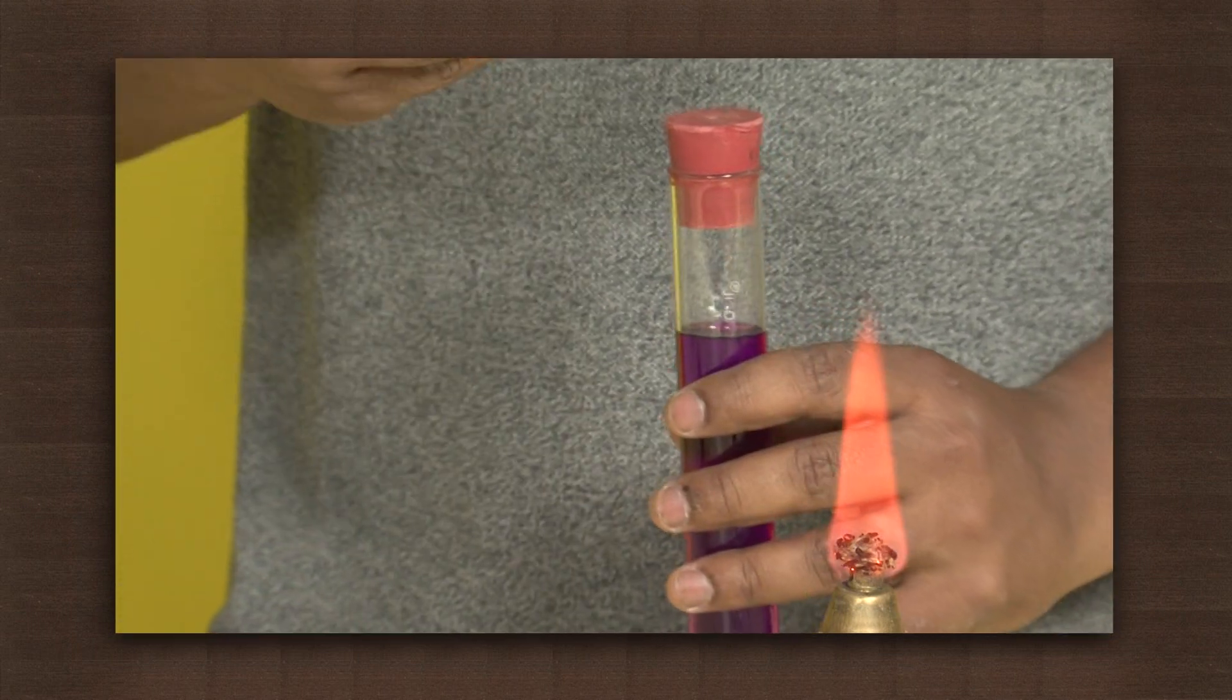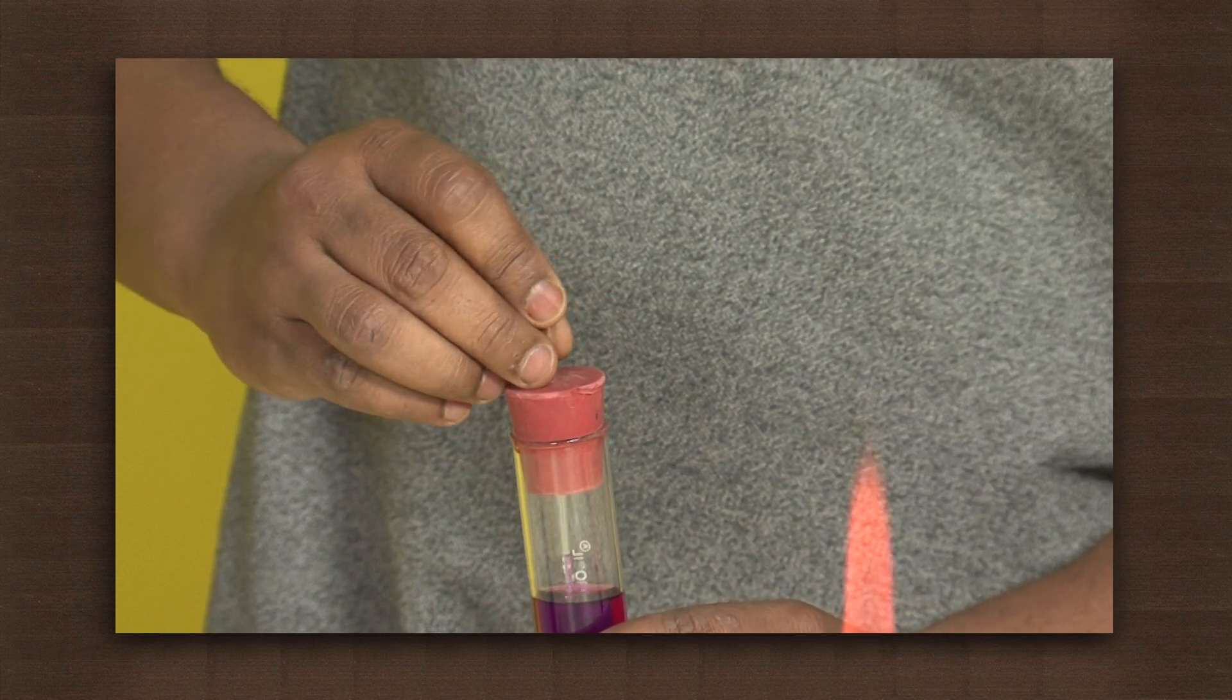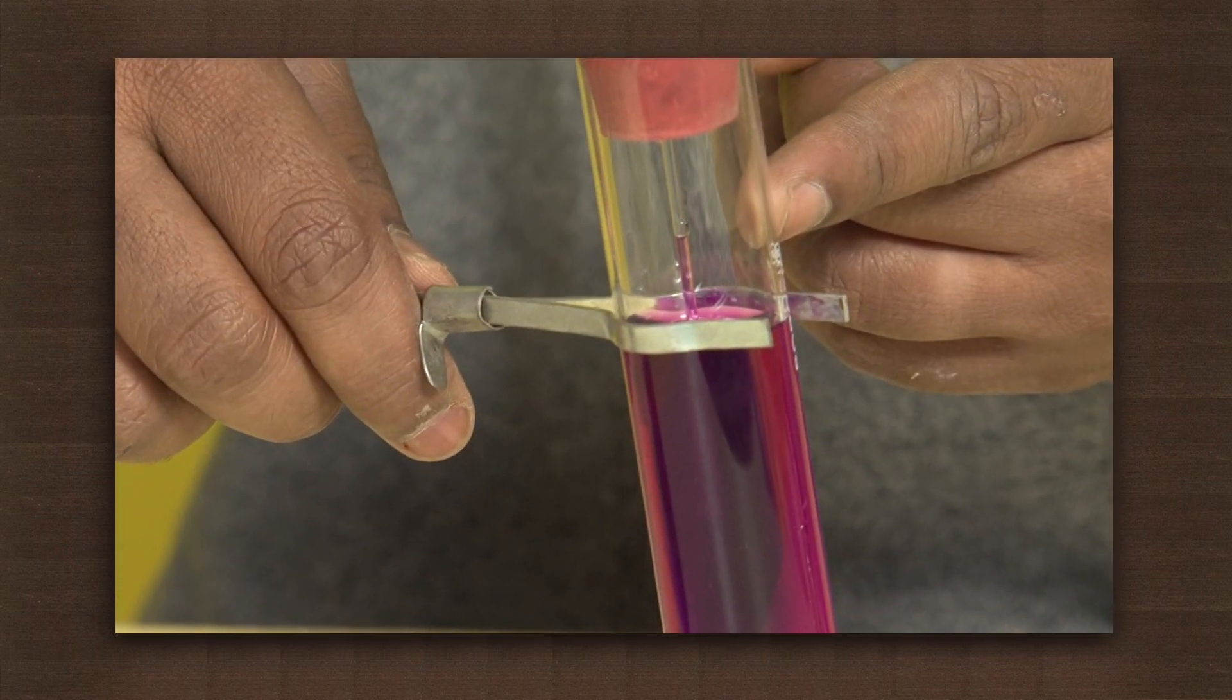Through the cork, pass a capillary tube such that its end is immersed in the water. Note the level of the colored water in the capillary tube.